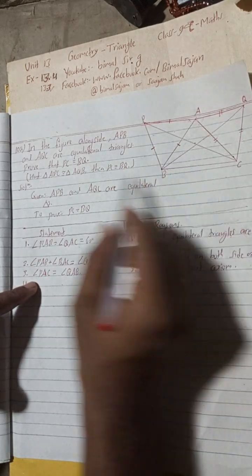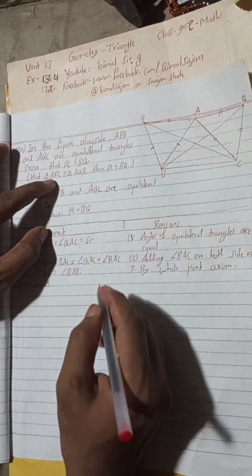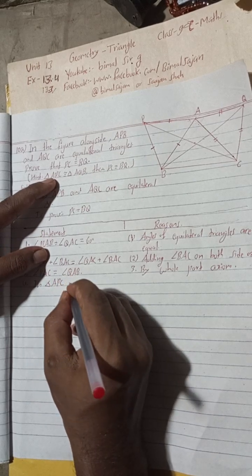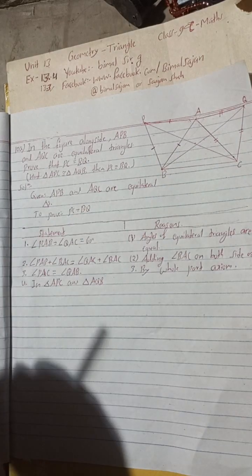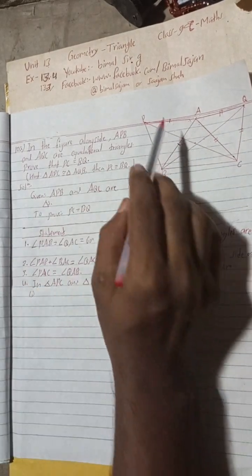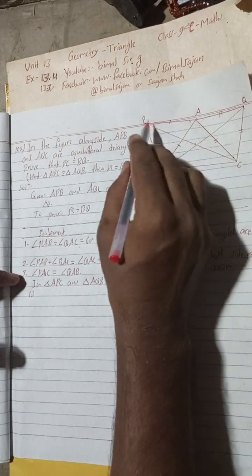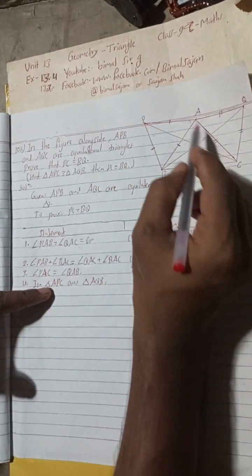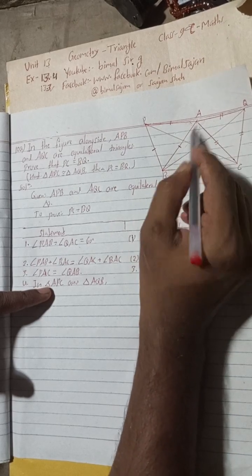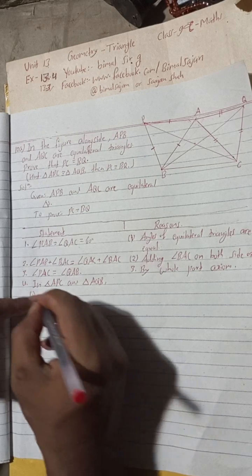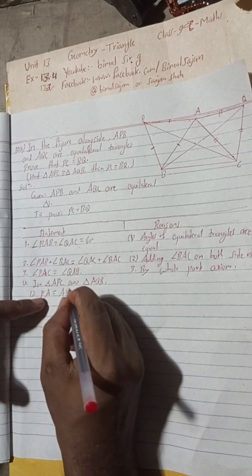Number four: Now we got angle PAC equal to this angle. So now take triangle APC and triangle AQB. In both triangles, we see this side, this angle, and this side. We can prove by angle-side. In triangle APC, side PA is equal to side AB in triangle AQB.